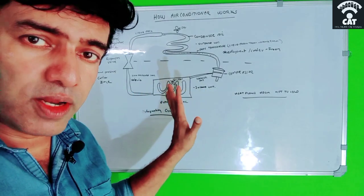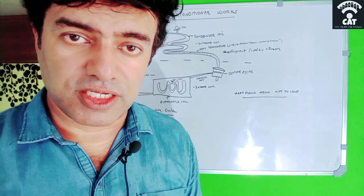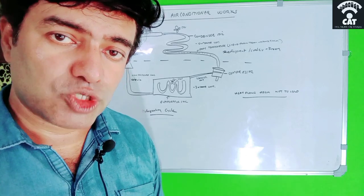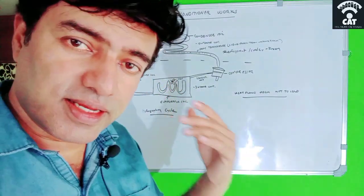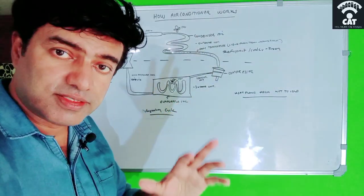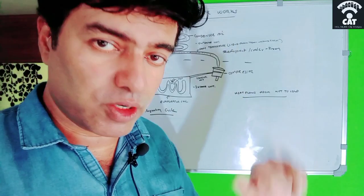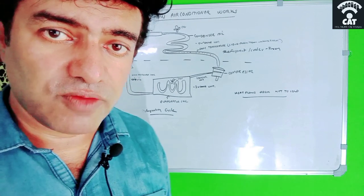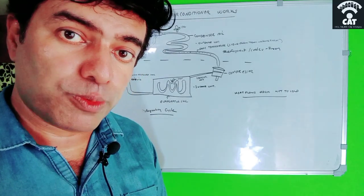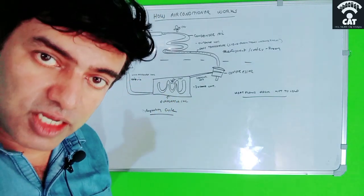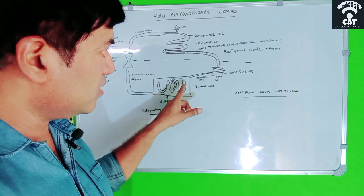From the expansion valve the refrigerant reaches the evaporator coil. The expansion valve and evaporator coil are both in the indoor unit inside the room. Since the refrigerant's boiling point is low, the room temperature can make it boil. The room temperature is higher than the refrigerant temperature inside the evaporator coil. The indoor unit fan sucks air from the room, and by this time the refrigerant will be super cold, so when room air blows over the evaporator coil, the refrigerant absorbs the heat from the room air.